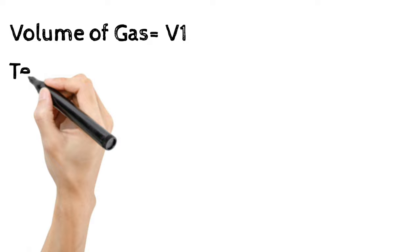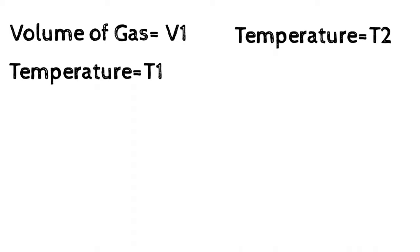Now let's consider initial volume of a gas is V1 at a temperature T1. And after changing only the temperature to T2, the volume finally becomes V2. Here also the pressure and amount remain unchanged.